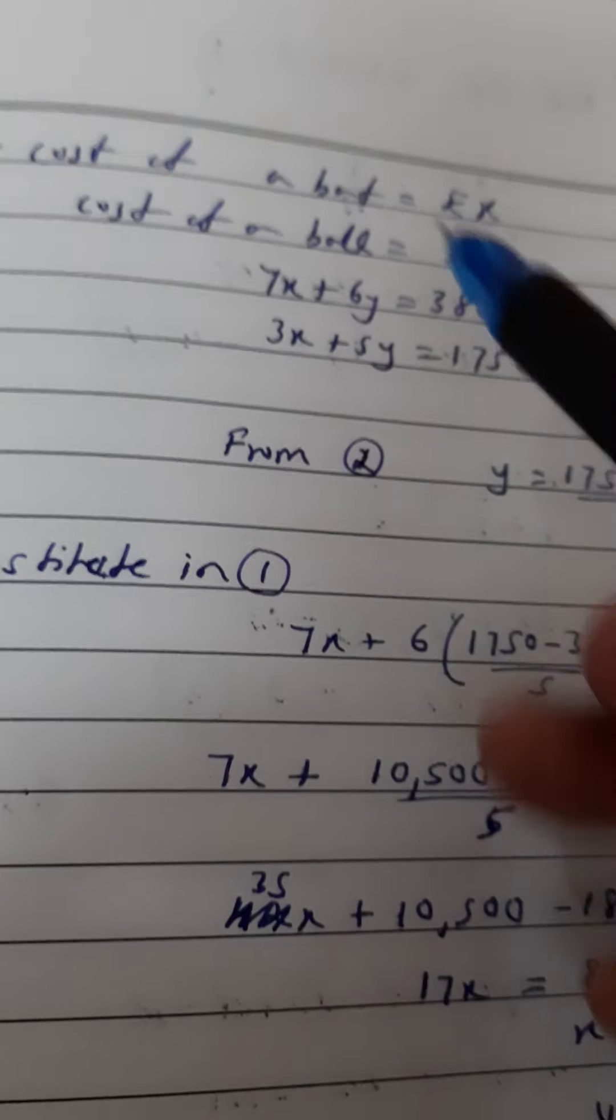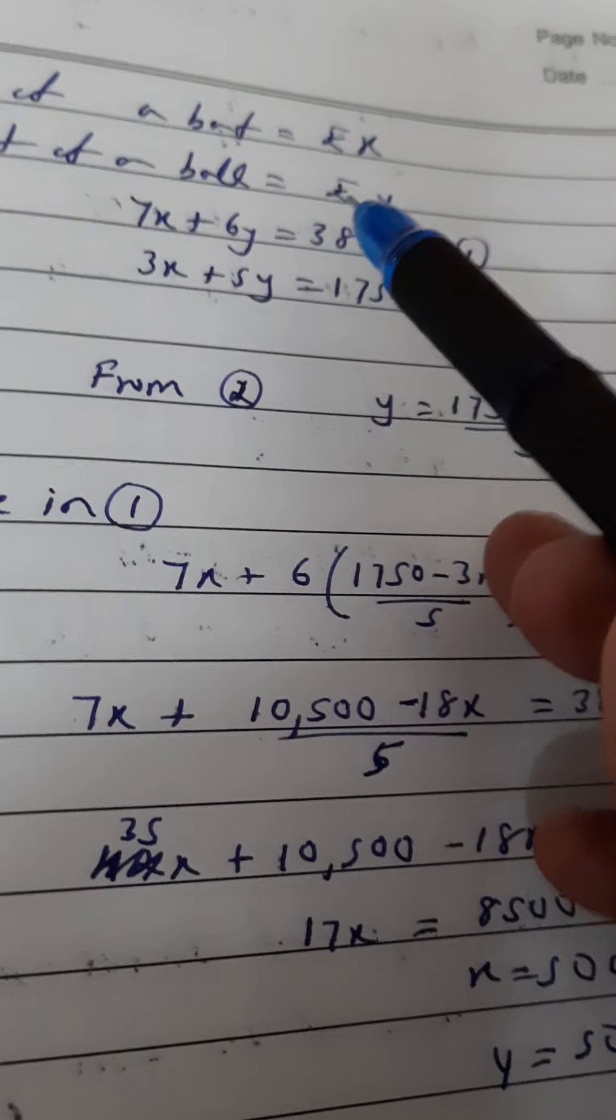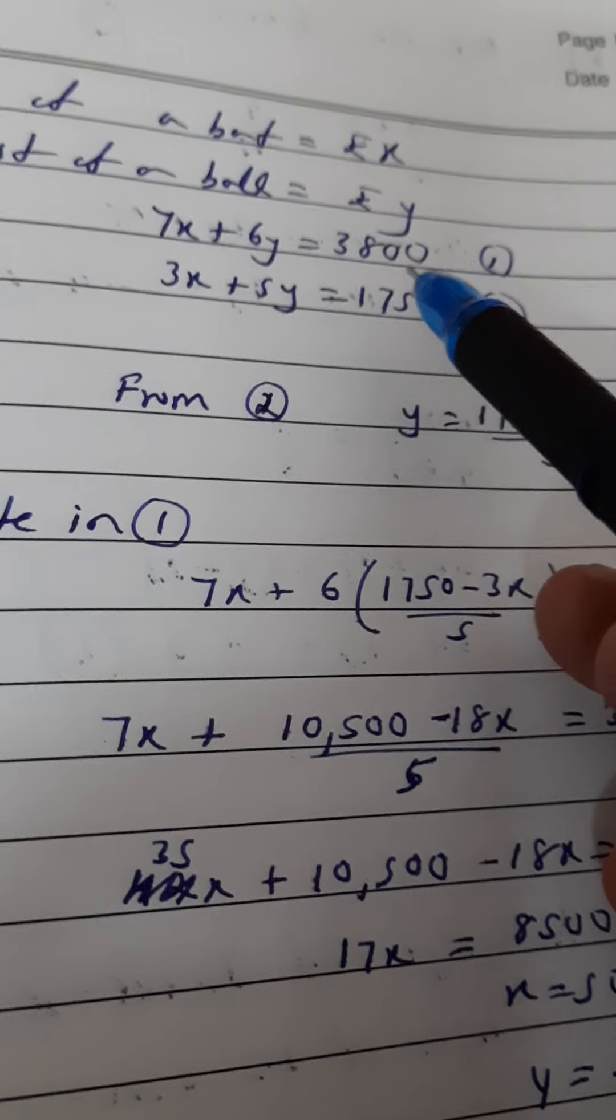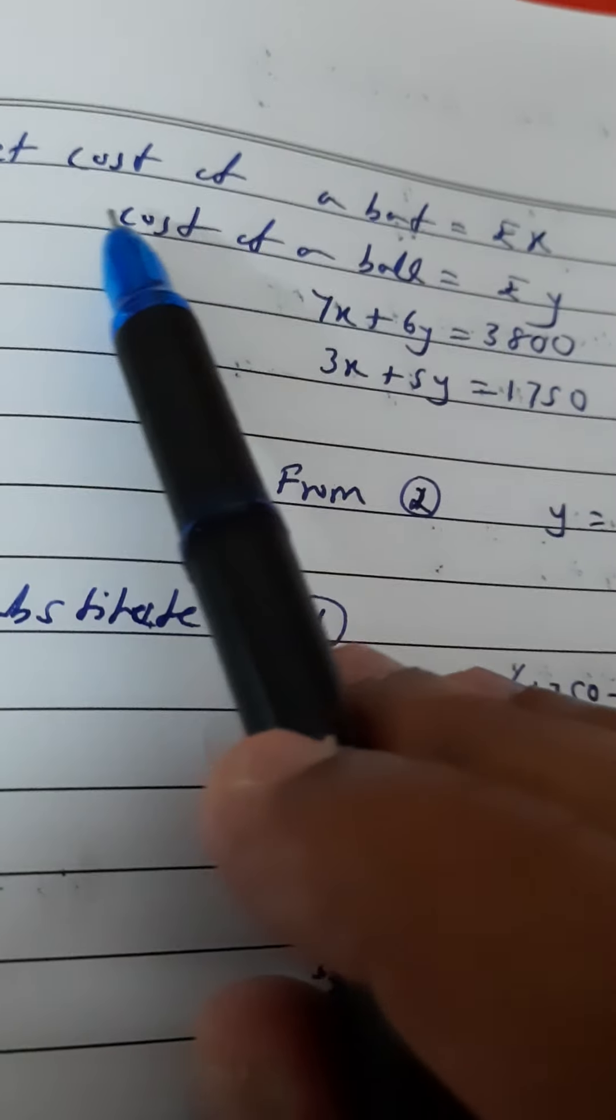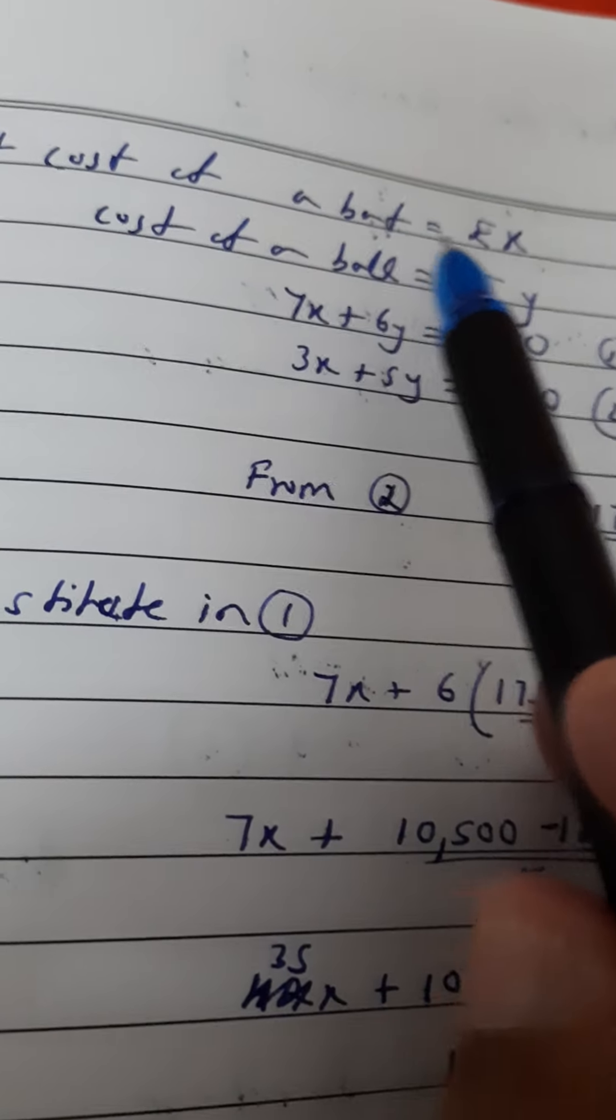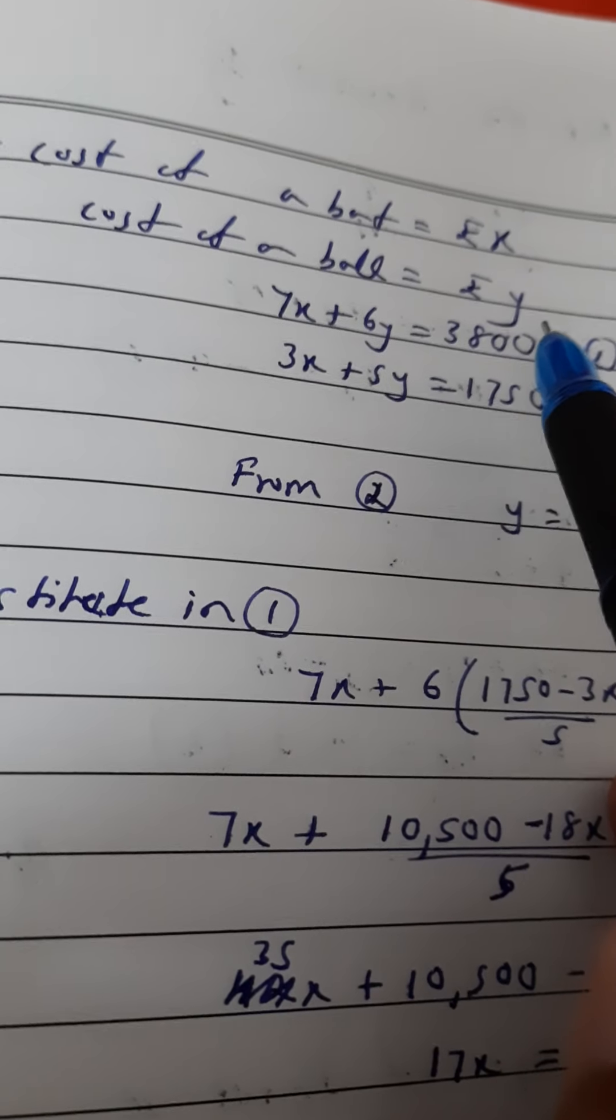Part 3. 7 bats and 6 balls are costing 3800 rupees. We start by assuming the cost of a bat be rupees x and the cost of a ball be rupees y.